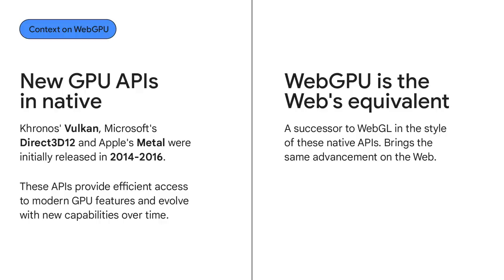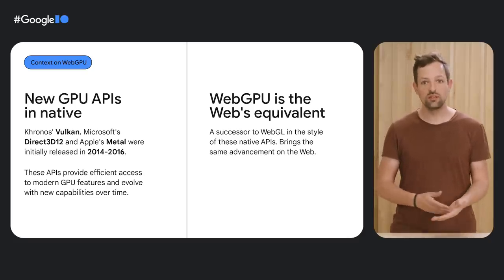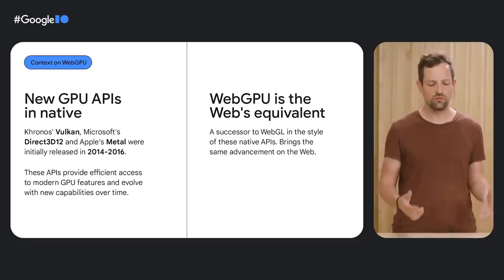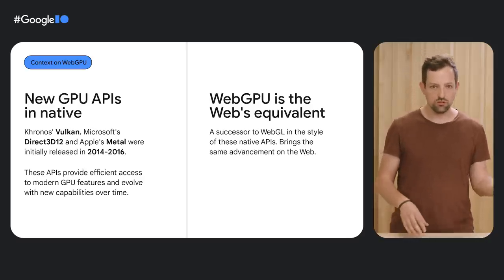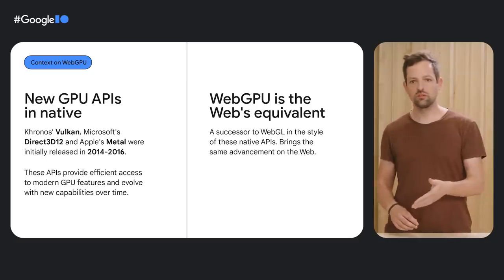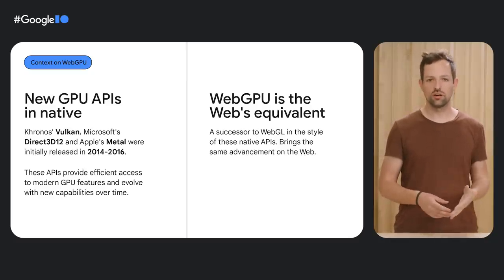To keep up with the evolution, there was a new breed of native APIs developed to more efficiently interact with modern GPUs — APIs like Direct3D12, Metal, and Vulkan. These new APIs have supported new and demanding use cases for GPU programming, like the explosion in machine learning and even more advances in rendering algorithms. WebGPU is the successor to WebGL, bringing the advancements of this new class of modern APIs to the web.